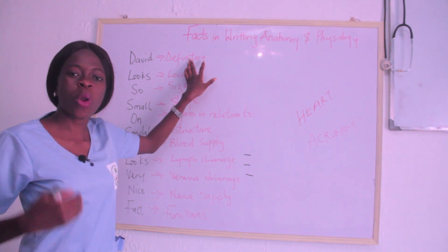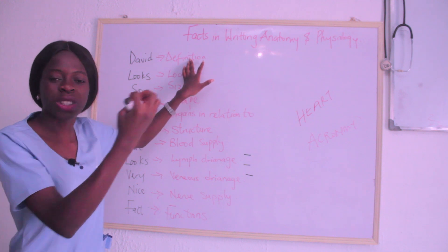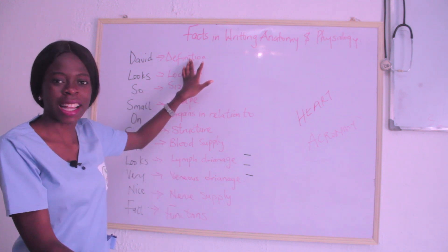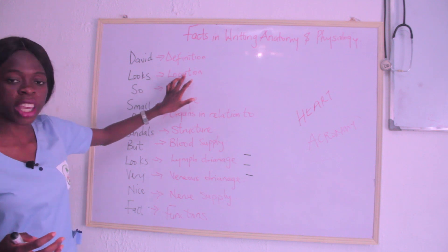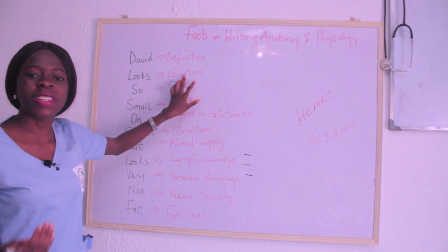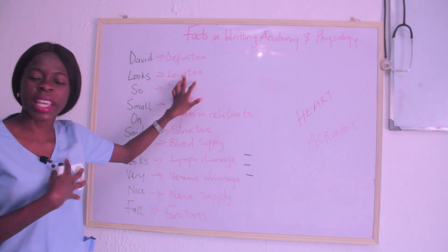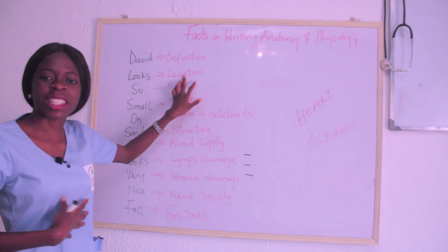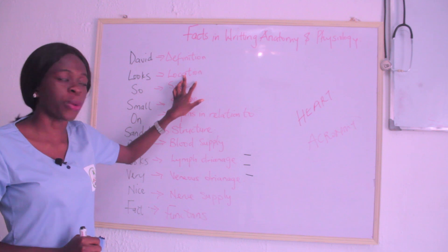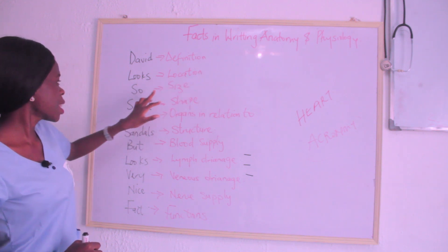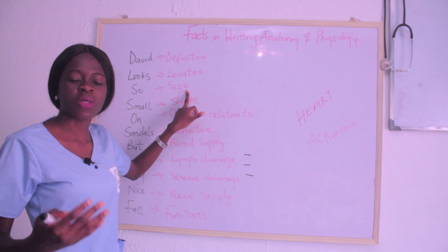You've defined the heart. Then L stands for Location — where is the heart located? The heart is located in the thoracic cavity. Then the next S stands for Size — what is the size of the heart?